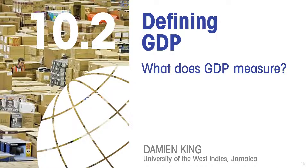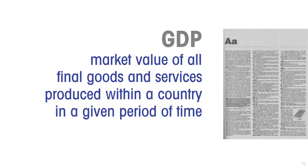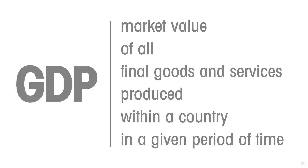Defining Gross Domestic Product. What does GDP actually measure? The definition is that GDP is the market value of all final goods and services produced within a country in a given period of time. It is supposed to be a measure of the total value of production that takes place in an economy. By deconstructing this formal definition, we can get a good idea of what actually is being measured and why each of the elements of this definition are there.